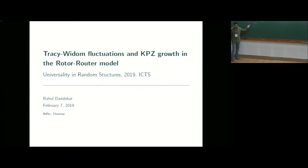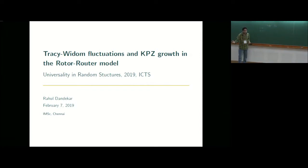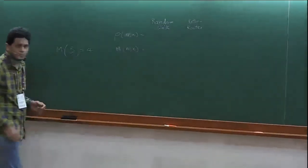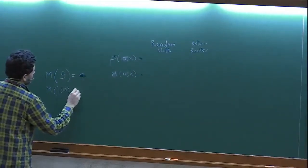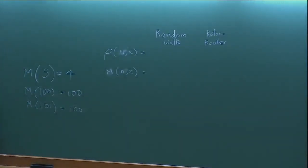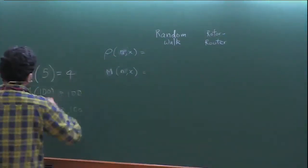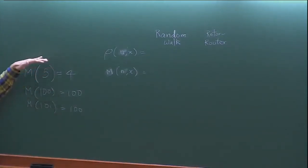Just to remind you, Lionel defined something called Abelian stack models. An Abelian stack model is specified by two things: rho and m. m tells you, if I receive n chips, how many chips do I send out? In the sandpile model, if I receive five chips, I only send out four. If I receive 100 chips, I send out all 100, but if I have 101, I send out 100 and keep one.